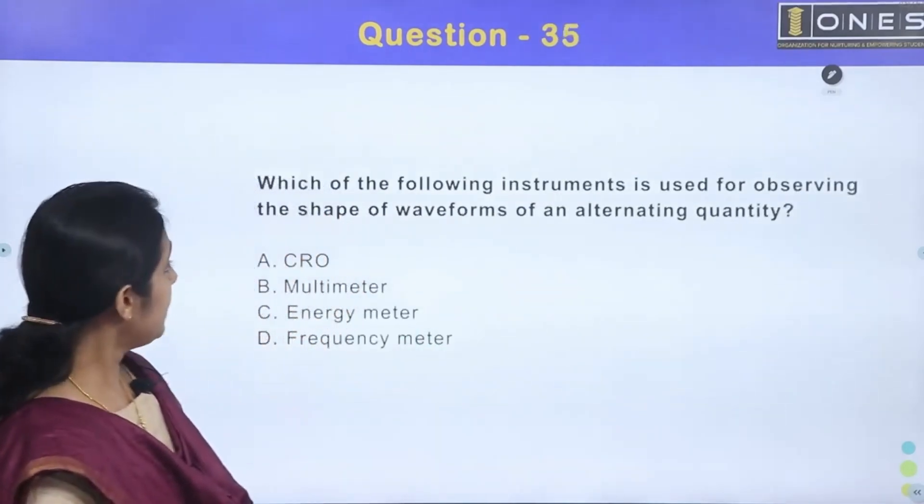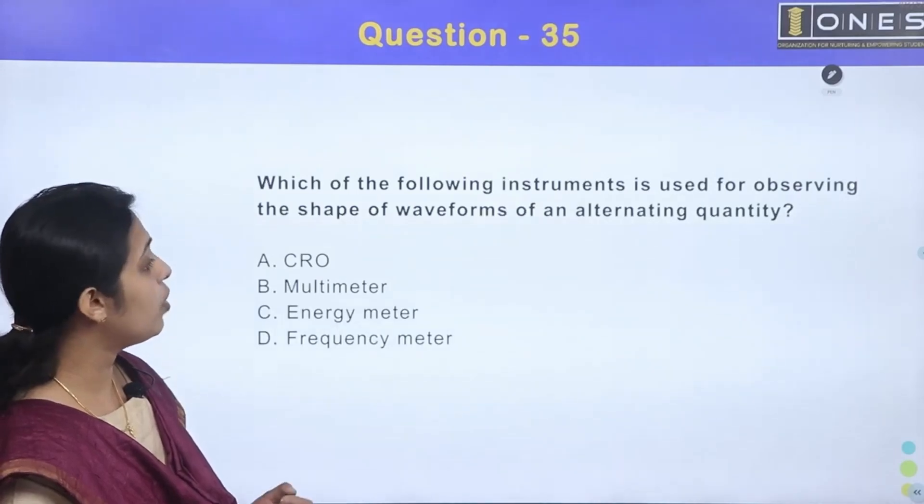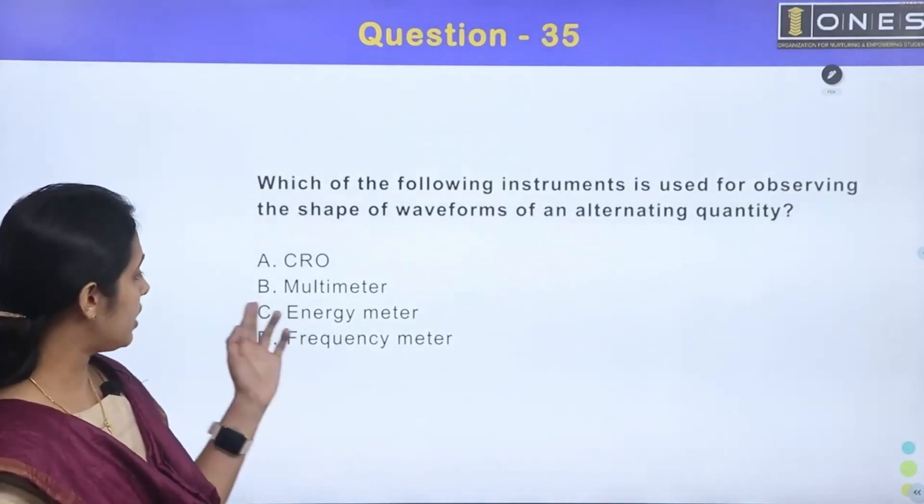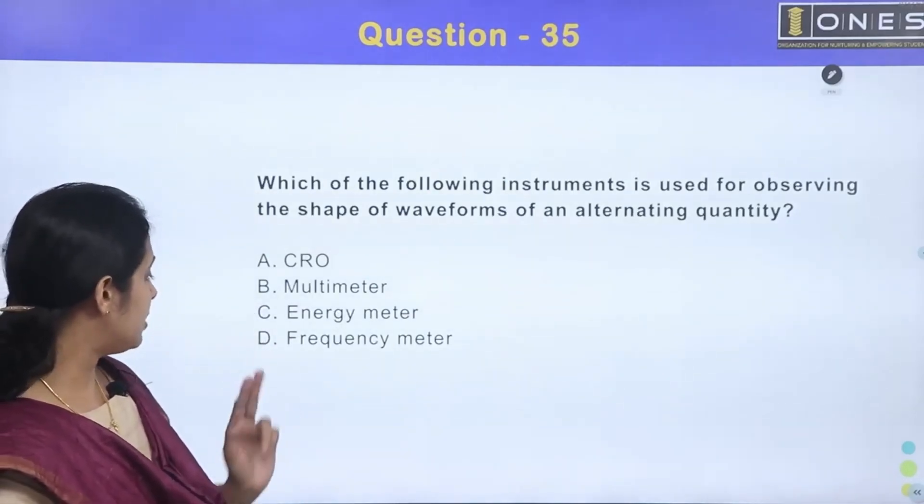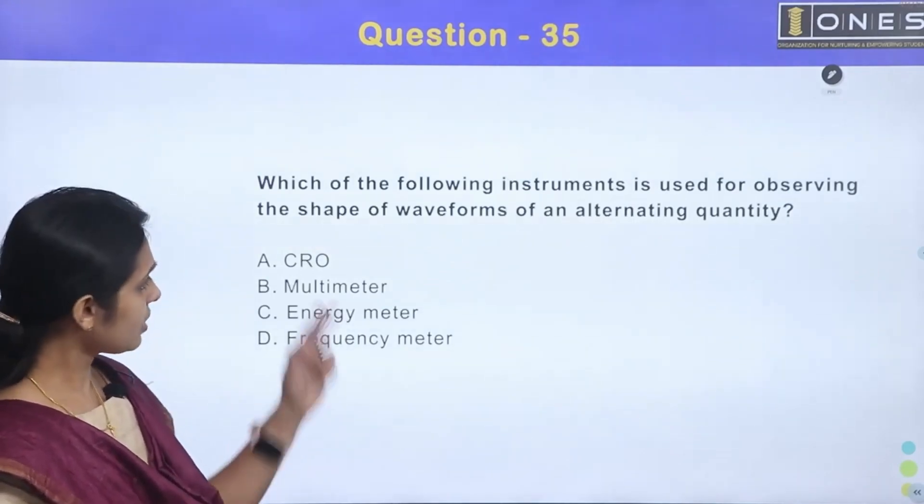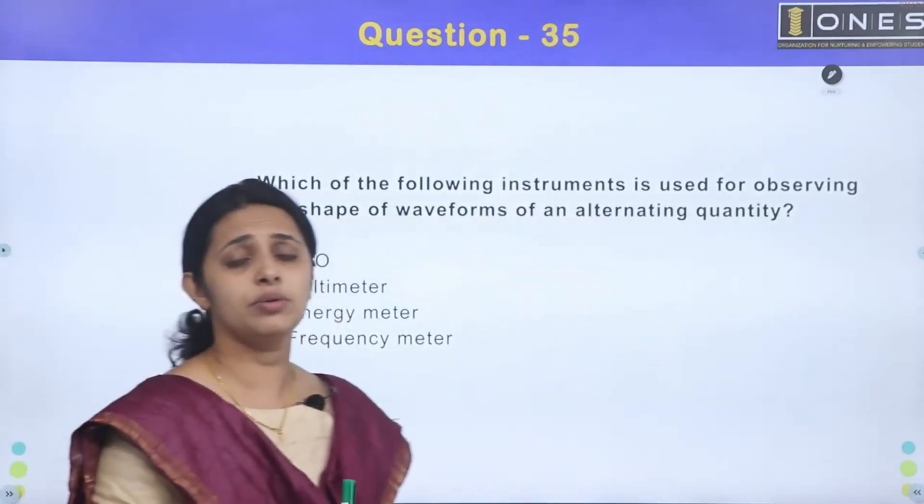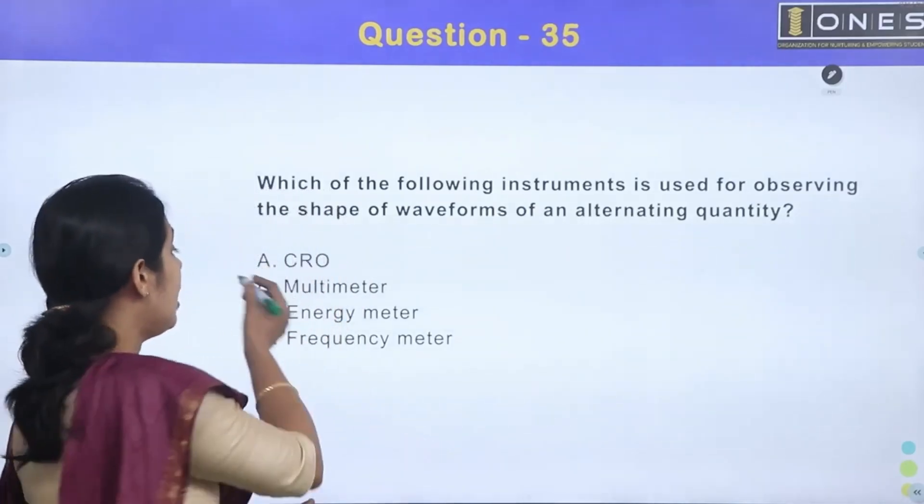Next question. Which of the following instruments is used for observing the shape of waveforms of an alternating quantity? Option A is CRO, Option B is multimeter, Option C is energy meter, Option D is frequency meter. What is the waveform that we use in the lab? It is CRO.